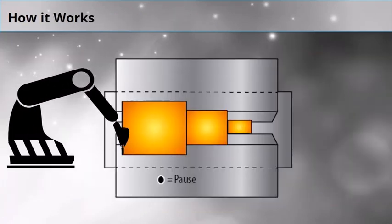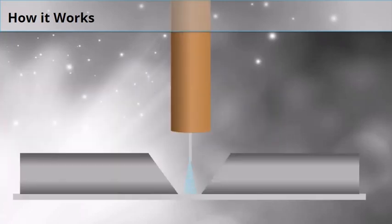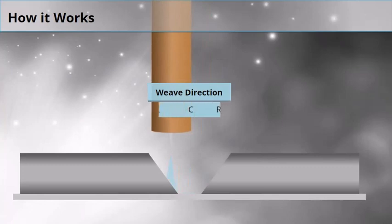TAST relies on the weaving motion across the joint to collect real-time data. It uses current changes in the contact tip to work distance to decide when to reverse the weaving motion.